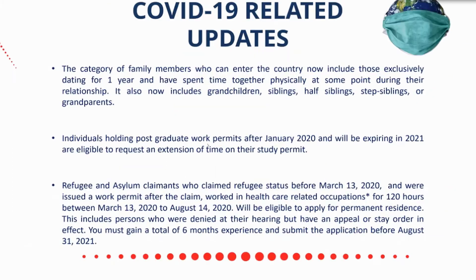Now for some COVID-19 updates. The category for family members to enter the country now includes those who are exclusively dating for one year and have spent time together in physical presence at some point during the relationship. If it's a long-distance relationship that has been genuine and active for that year, you're able to prove it, and you are separated due to COVID and travel restrictions, you are now eligible to have that partner enter Canada.